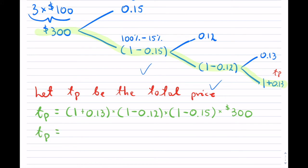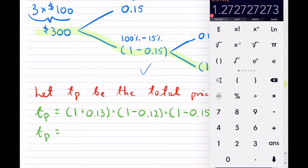Let's take out our calculator here. We can use the brackets. 1 plus 0.13, brackets, multiplied by, open bracket, 1 minus 0.12, close the bracket. And times the $300.